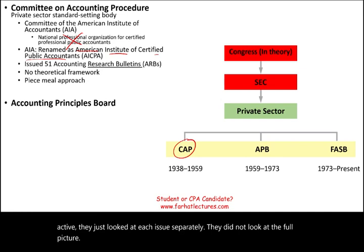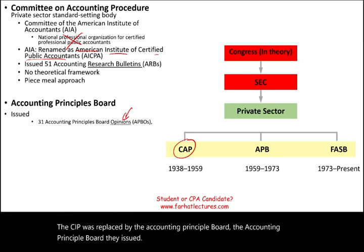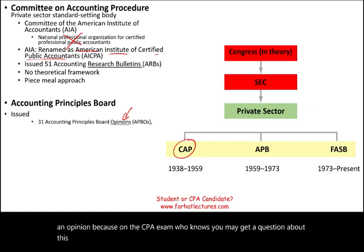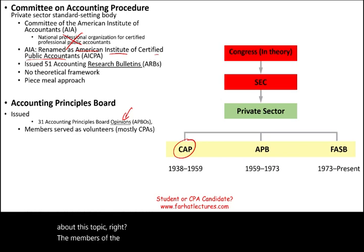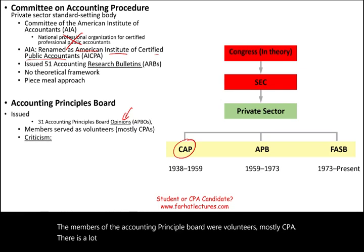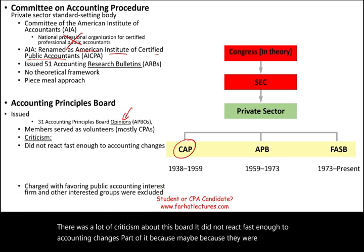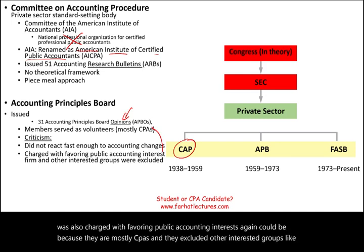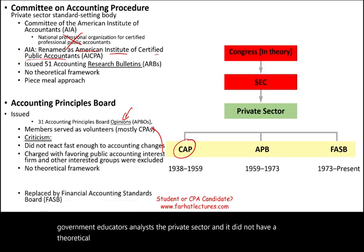CAP was replaced by the Accounting Principles Board (APB), which issued opinions. The members were volunteers, mostly CPAs. There was a lot of criticism: the APB did not react fast enough to accounting changes, was charged with favoring public accounting interests, excluded other interested groups like government, educators, and analysts, and lacked a theoretical framework. So the APB was eventually replaced by FASB in 1973.